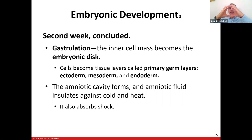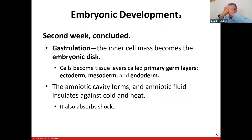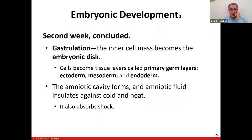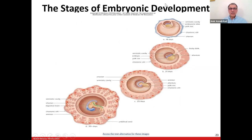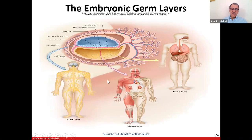Gastrulation: the blastocyst is a ball with cells inside and fluid-filled space. When the cells multiply and then invaginate — fold inward — that is gastrulation. The sequence is: zygote, morula, blastula, gastrula. During gastrulation, the inner cell mass becomes folded, and cells become tissues called primary germ layers: ectoderm, endoderm, and mesoderm. These are stages of embryonic development. There are quiz and exam questions from this — make sure you know it.